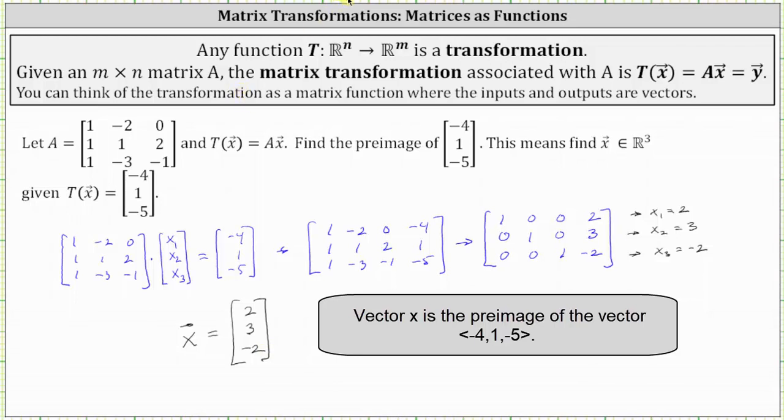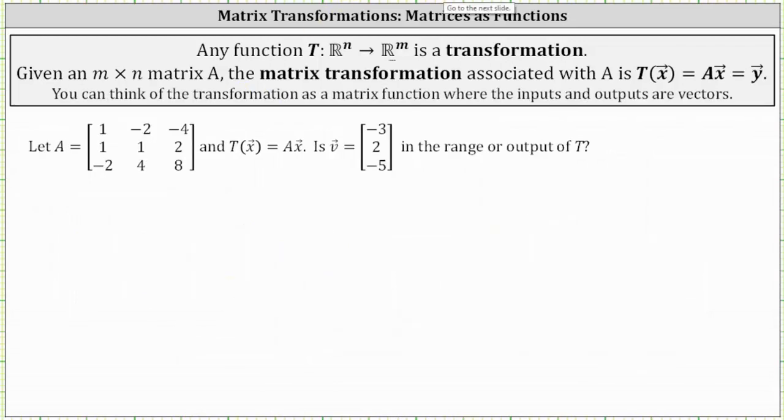Let's take a look at a second example. Again, we are given matrix A, which is a three by three matrix, as well as T of vector x equals matrix A times vector x. And we're asked, is vector v in the range or output of T? Well, if it is, there must be some vector x such that matrix A times vector x equals vector v.